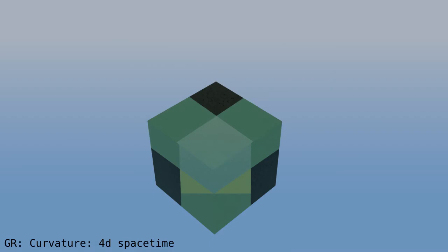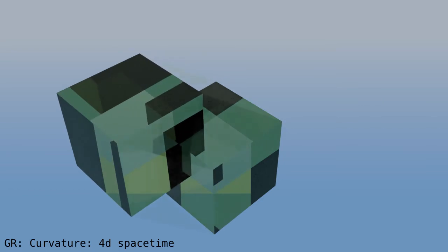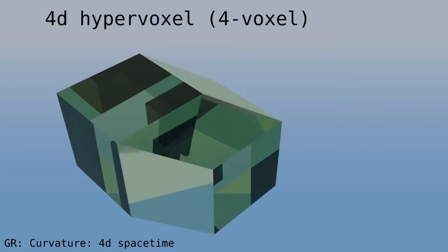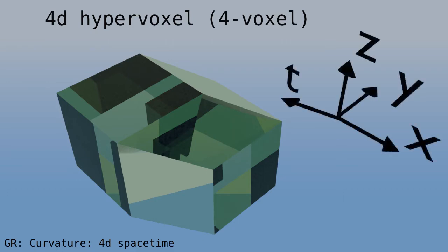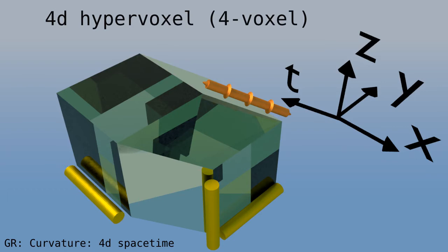So far, we looked at curvature in two and three dimensions of space. We're finally ready to add the fourth dimension, which is time. Here we copy a voxel, pull it out, and connect the corners. The result is a hyper voxel, or four voxel. It's the building block of spacetime. The size is one unit in each space dimension. And in a time dimension, we also measure one unit, for example, a nanosecond.